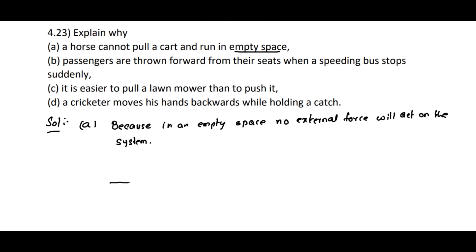We can show it like this also. Suppose this is the ground. Whenever the horse is walking on the ground, it will exert some force on the ground — we can call it action. At the same time, the force will be exerted by the ground on the feet of the horse — we can call it reaction.